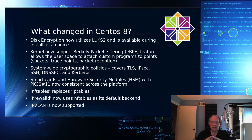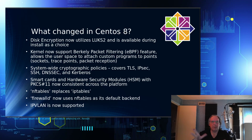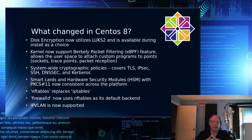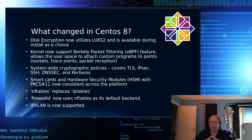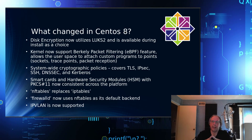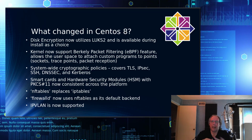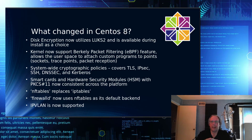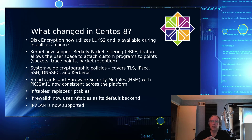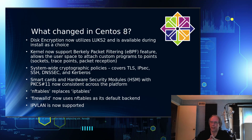PKCS 11 is now consistent across the platform — before, some had version 10 and some had 11, but now they all have 11. IP tables has been superseded by NF tables, and firewalld now uses NF tables as its backend. NF tables is supposed to be better than IP tables and a little easier to understand and use.